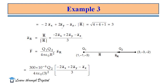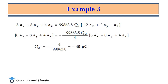From this, we write the unit vector Âᴿ = R⃗ / |R⃗| = (-2Âₓ + 2Âᵧ - Âᵤ) / 3. According to Coulomb's law, F⃗ = (Q₁·Q₂) / (4πε₀·R²) · Âᴿ. We substitute Q₁, R², and Âᴿ, and simplify using a calculator. On the left-hand side we write the given force expression: 8Âₓ - 8Âᵧ + 4Âᵤ = -980063.8·Q₂/4 · (8Âₓ - 8Âᵧ + 4Âᵤ). Simplifying this expression, we finally get Q₂ = -40 microcoulombs.